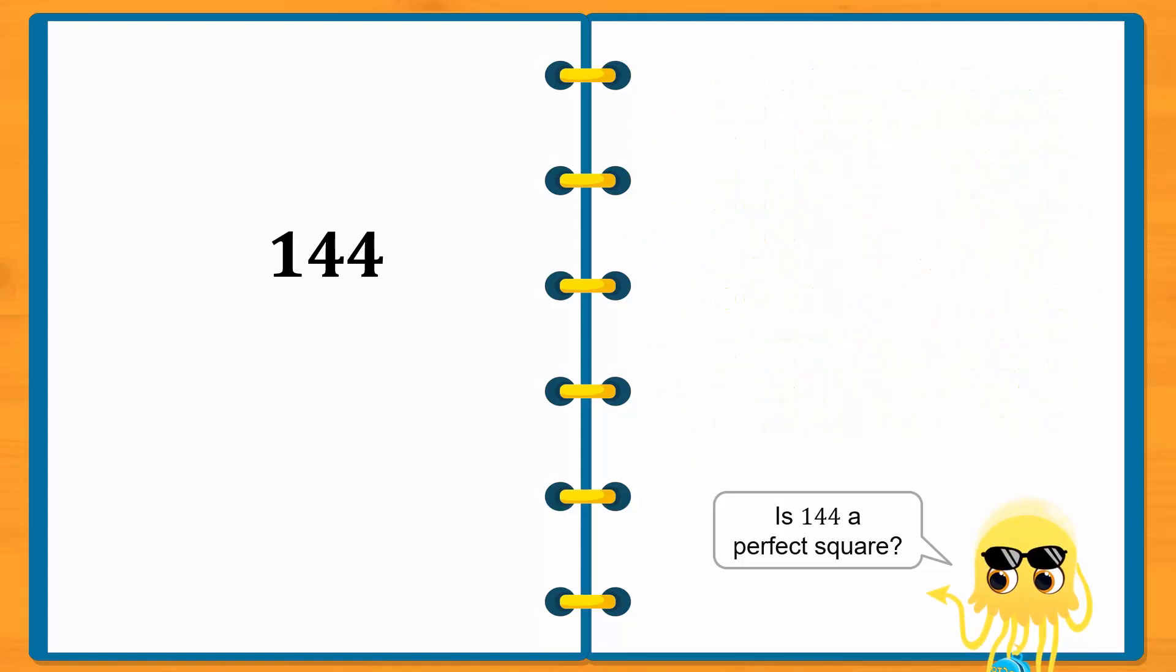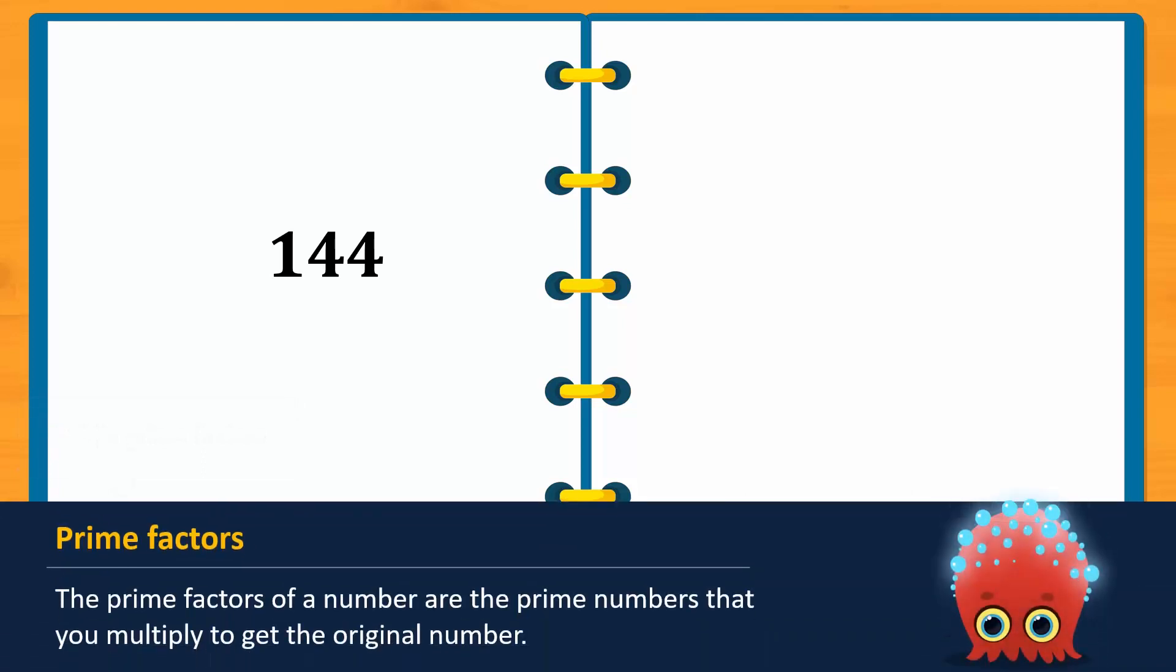We do so by first writing the number as a product of its prime factors. The prime factors of a number are the prime numbers that you multiply to get back to the original number.